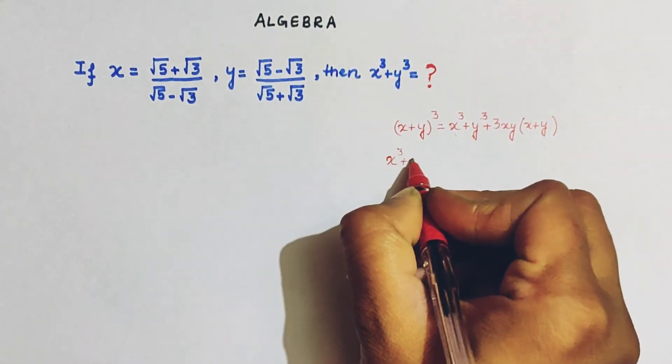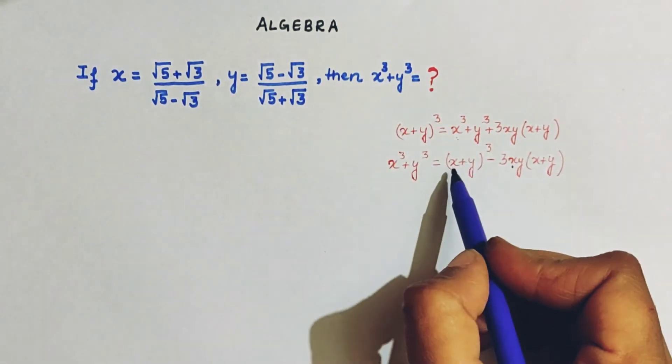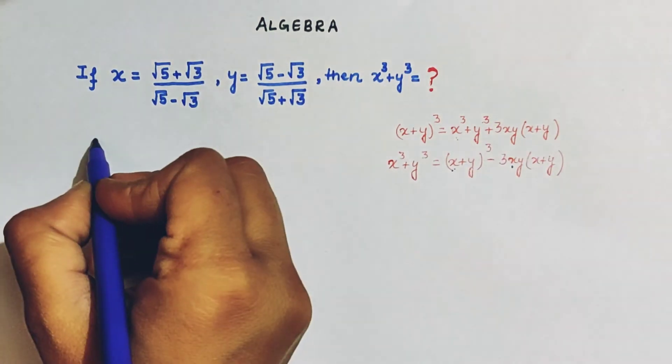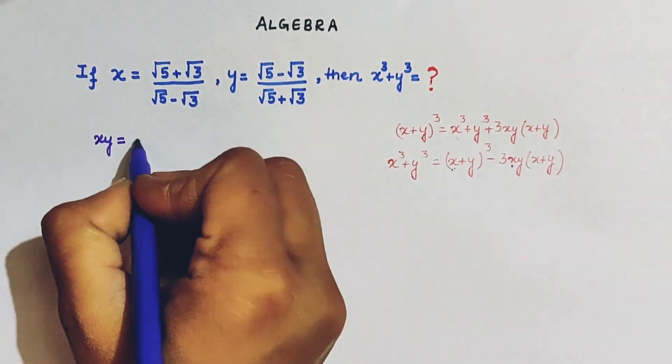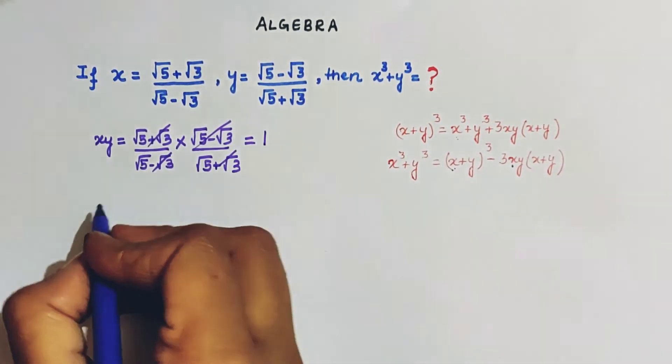So here, x cubed plus y cubed is equal to... Now let's see here, for finding this value, we need to simply find xy sum and xy product. So first of all, let's find the product, so this will be... So this and this will get cancelled and product is 1.